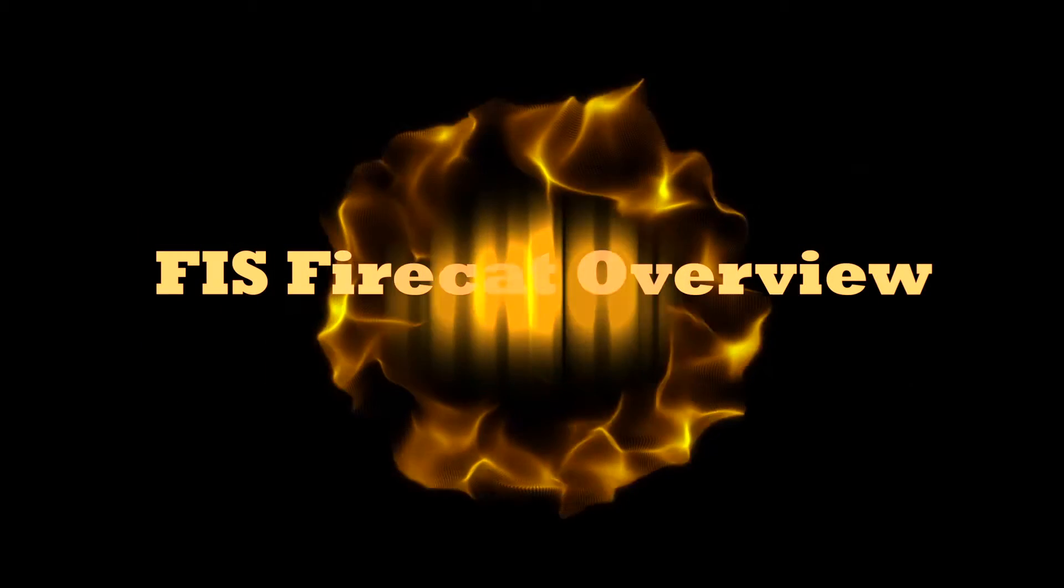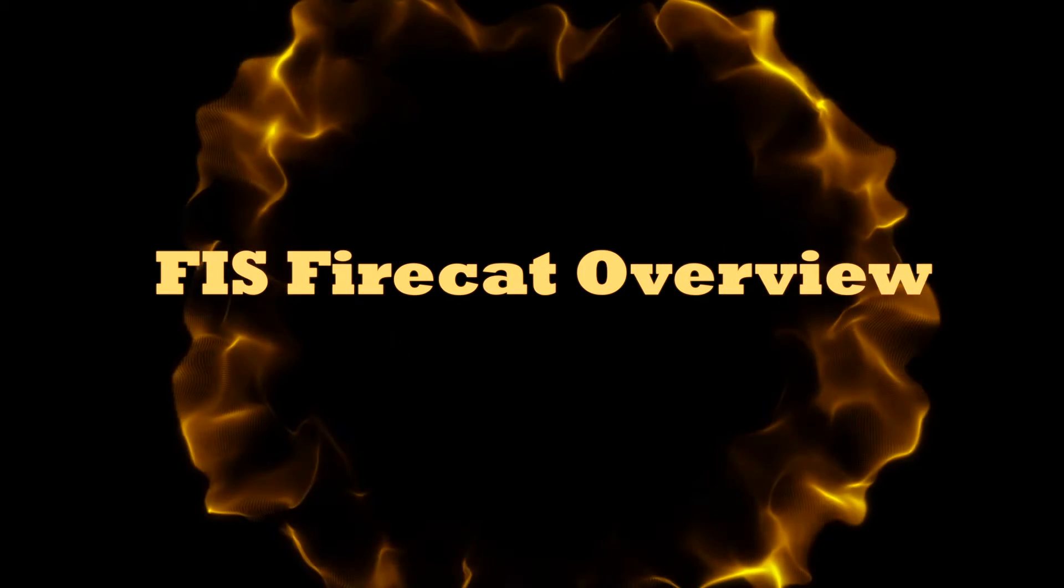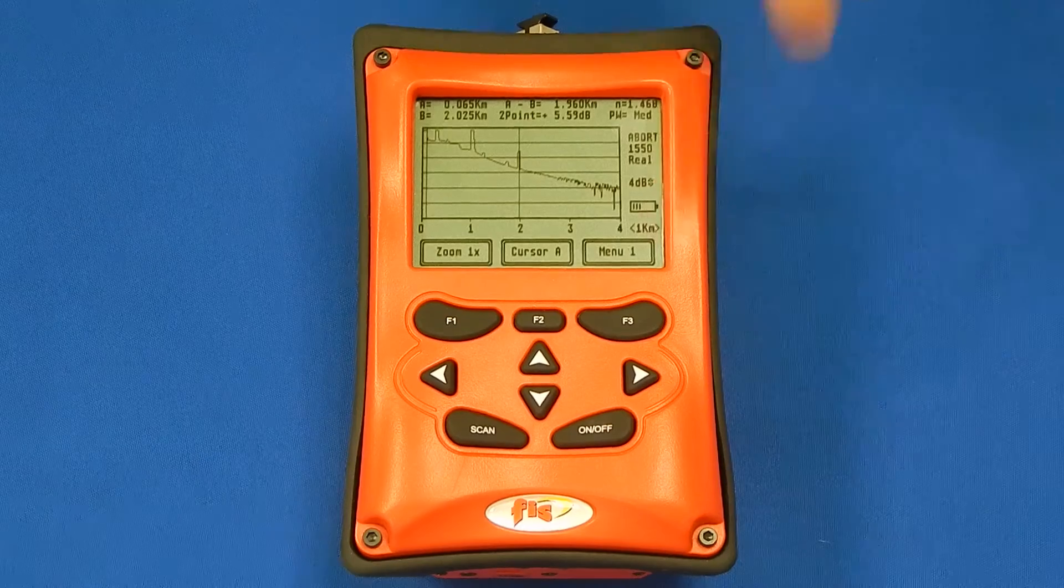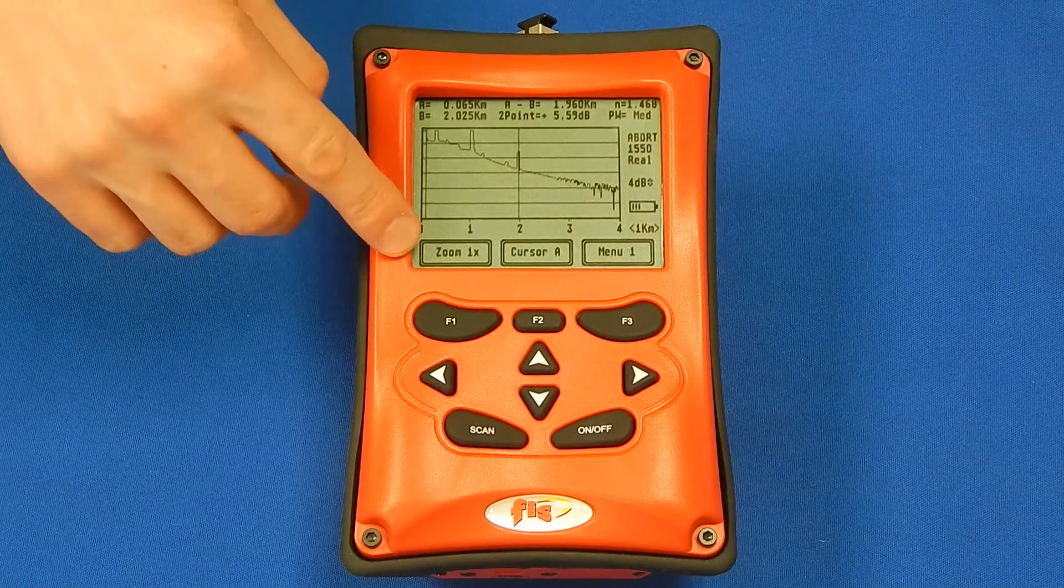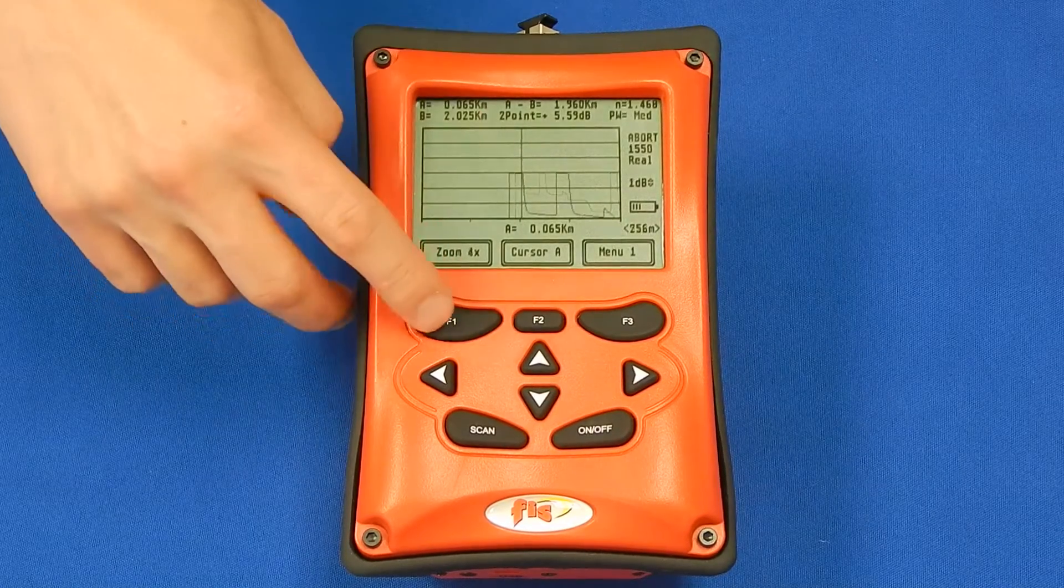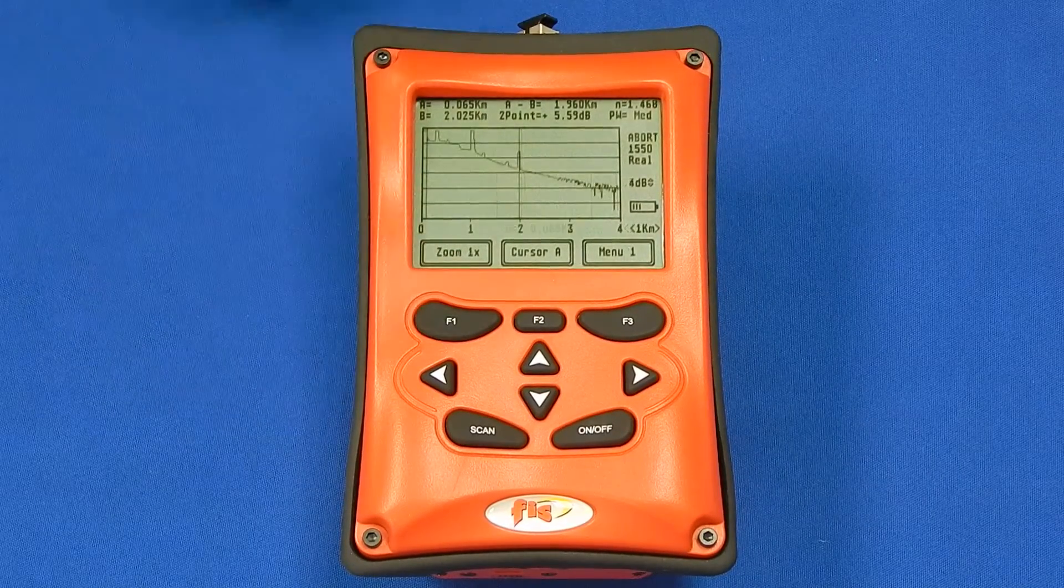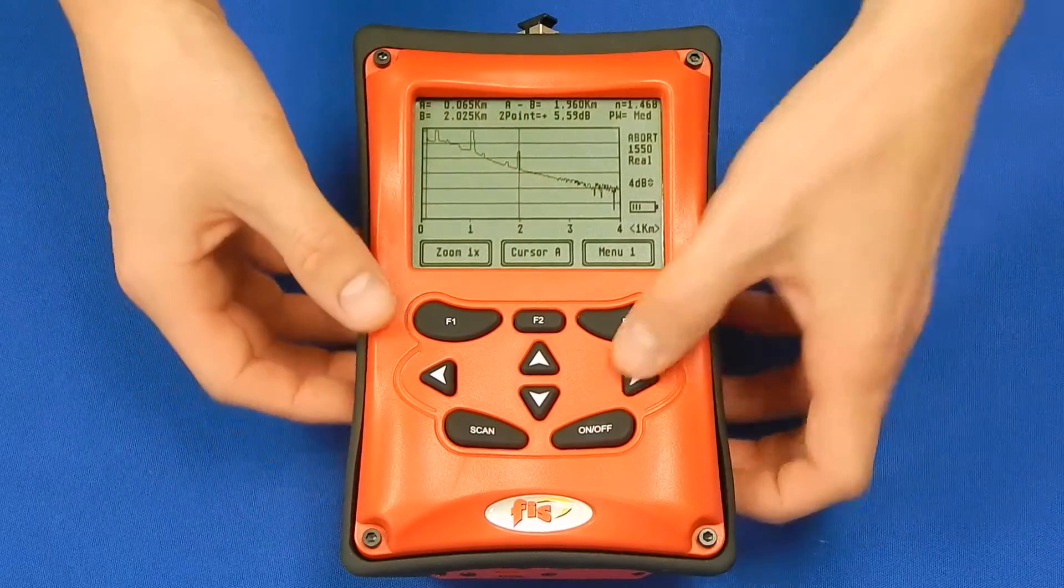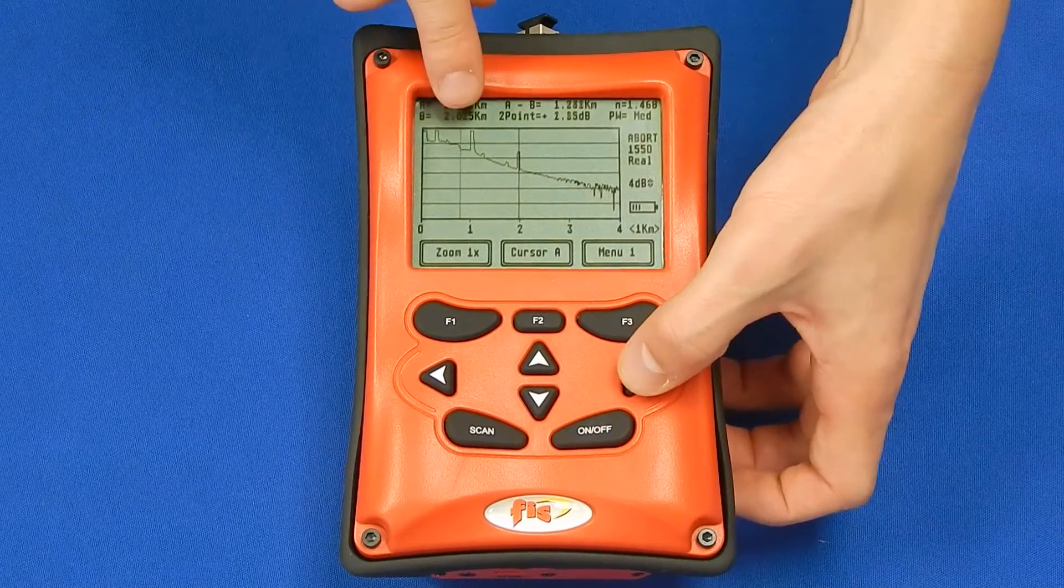Here is a product overview of the menus on the unit. In menu one, the zoom can be adjusted up to eight times to focus in on detailed areas in your trace. You can also move the cursors to select specific events or sections of the link as needed.